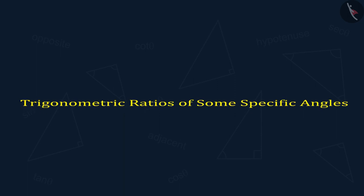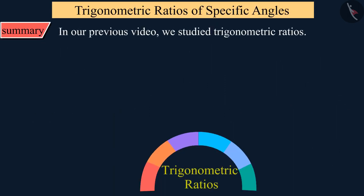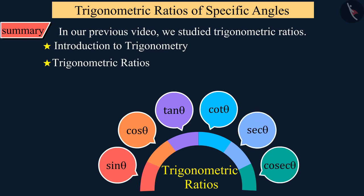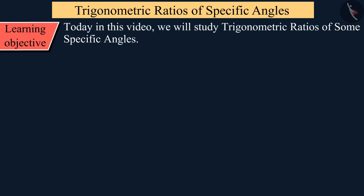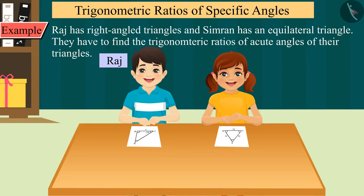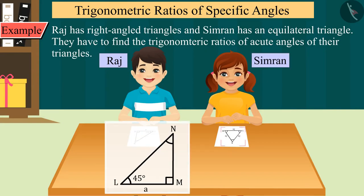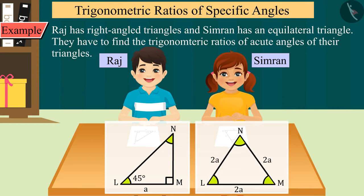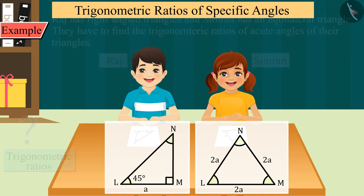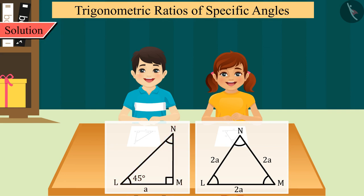Welcome to this video. In our previous video we studied trigonometric ratios. Today in this video we will study trigonometric ratios of some specific angles. Raj has a right angled triangle and Simran has an equilateral triangle, and they have to find the trigonometric ratios of their respective acute angles.